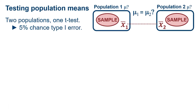We often want to compare the averages or means of different populations. When we have two populations, we typically do a single t-test for the pair. This usually gives us the correct answer, but it does have a 5% chance of type 1 error — that is, telling us the populations have different means when they don't.